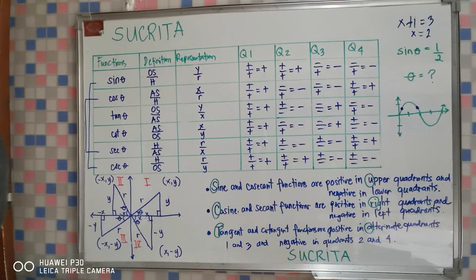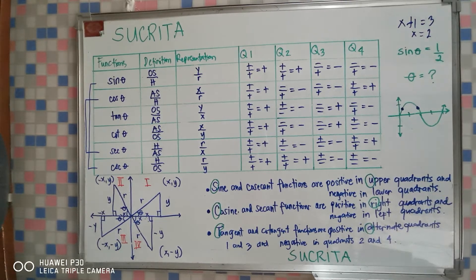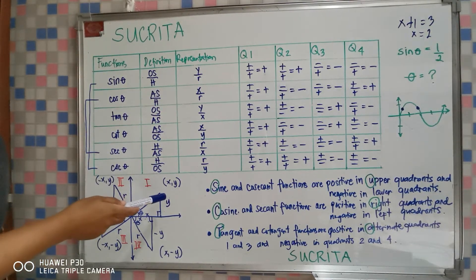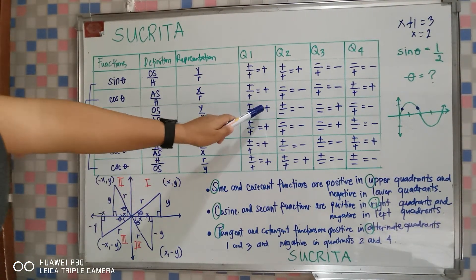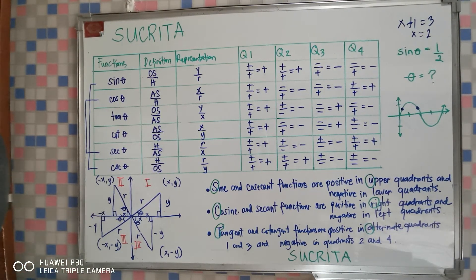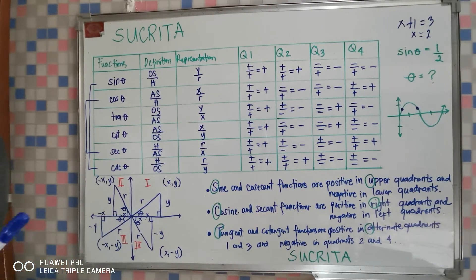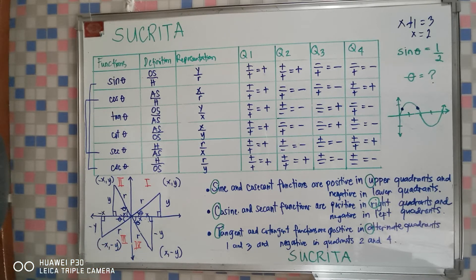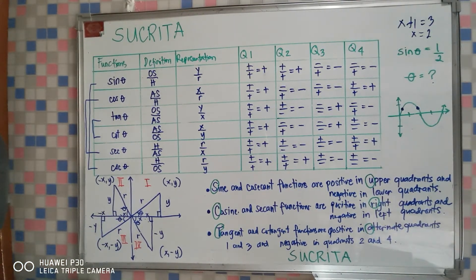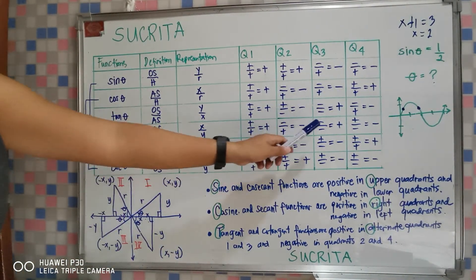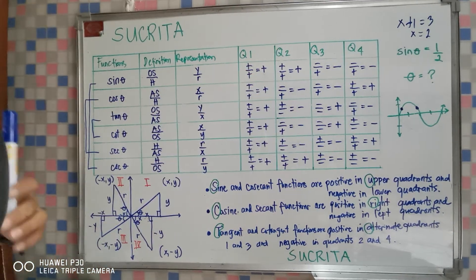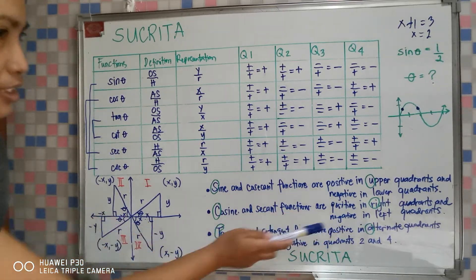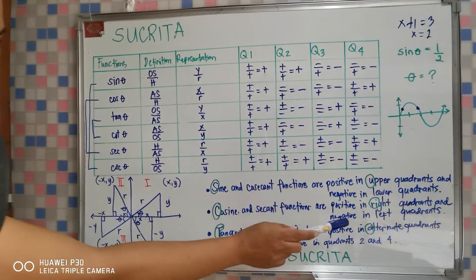Let's proceed to the tangent function. Tangent θ is equal to the opposite side over the adjacent side, or y over x. In the first quadrant, y is positive and x is positive, so positive divided by positive is positive. In the second quadrant, y is positive but x is negative, so the result is negative. In the third quadrant, y is negative and x is also negative, so negative divided by negative is positive. In the fourth quadrant, y is negative and x is positive, so the result is negative. The tangent and cotangent functions are positive in alternate quadrants 1 and 3, and negative in quadrants 2 and 4.